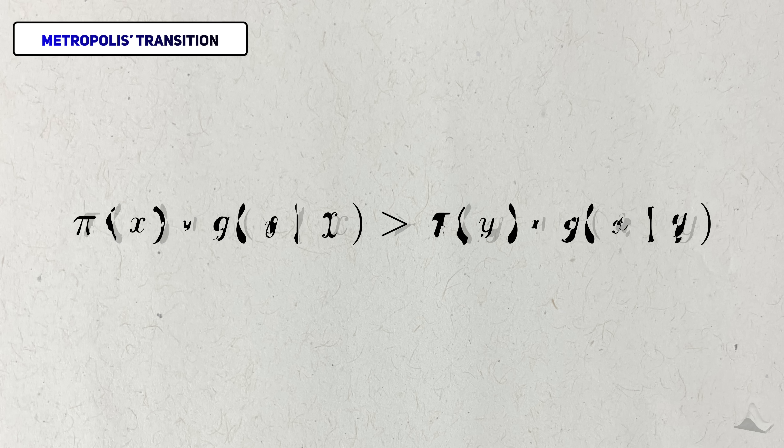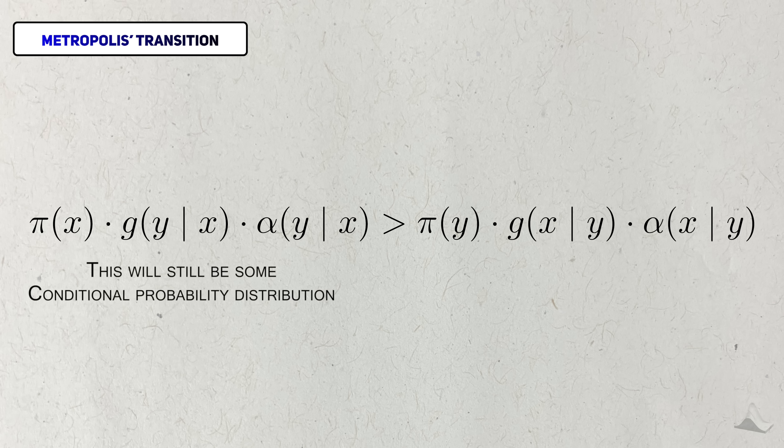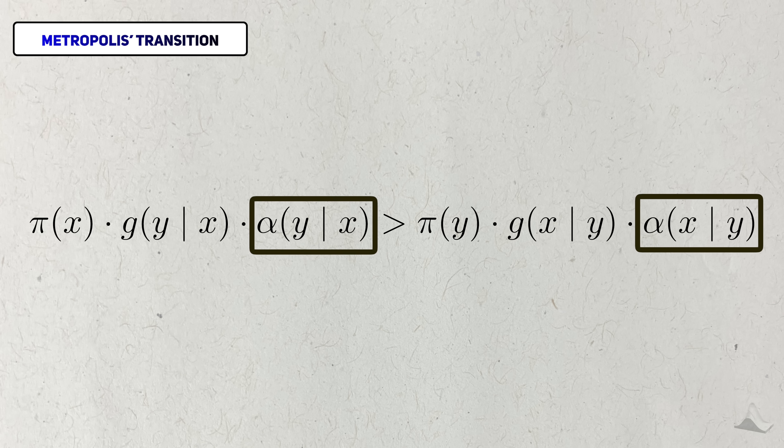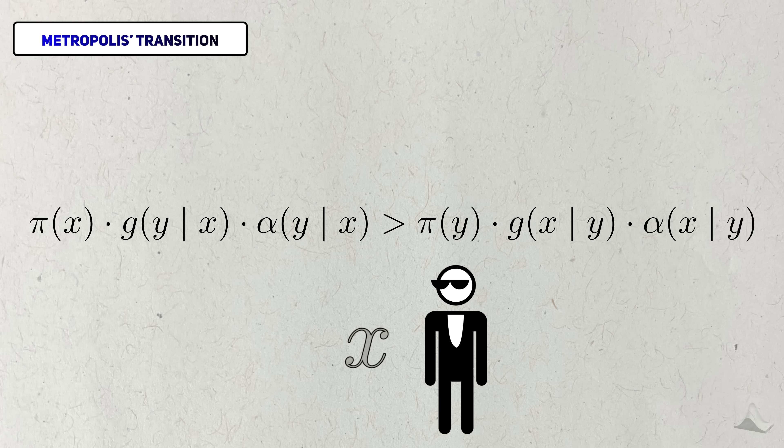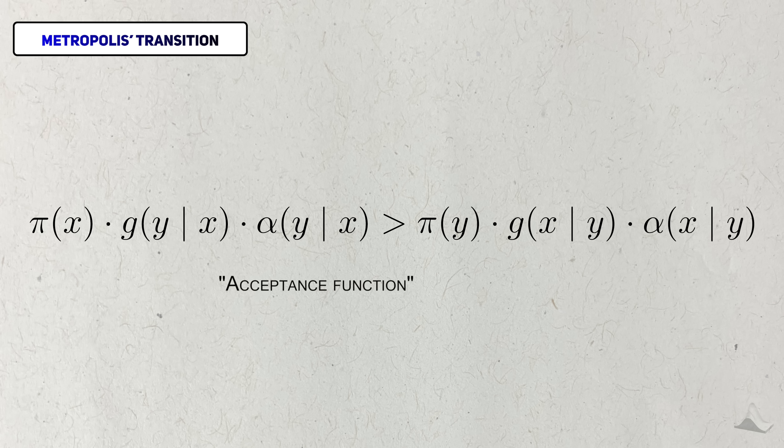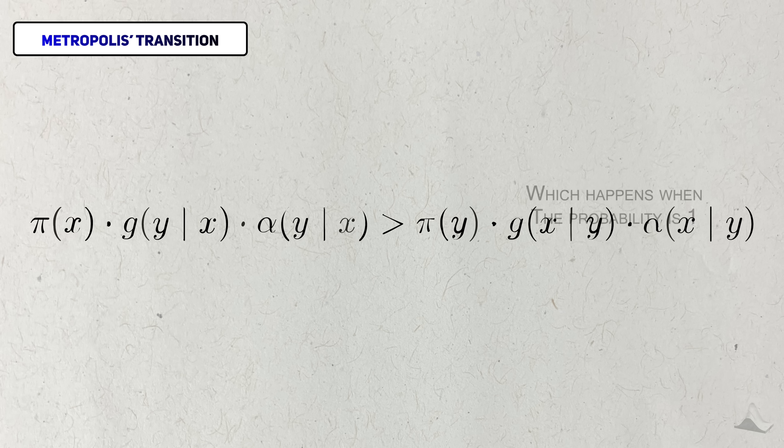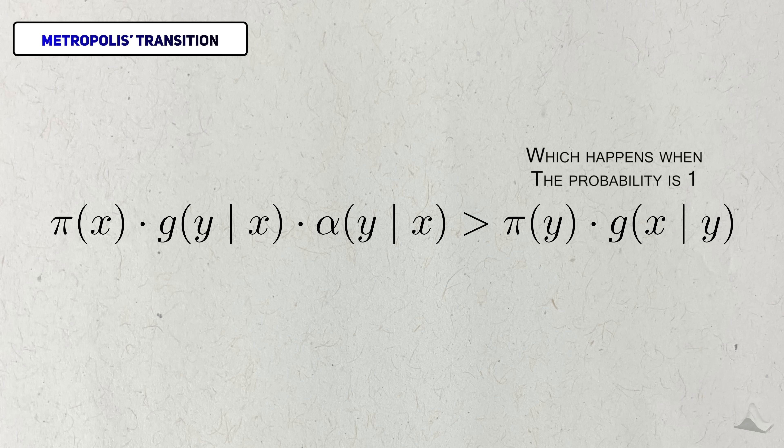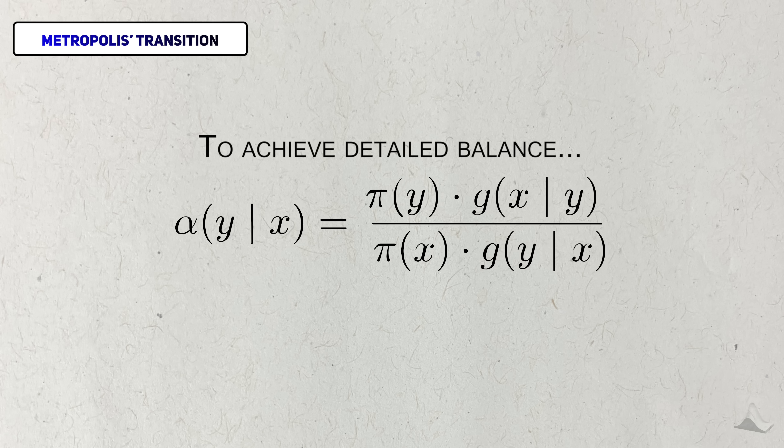To represent this, we'll split the transition distribution into two parts. The function g will still represent some conditional probability distribution, but now there's a new alpha function here. The purpose of this function is to act as a sort of gatekeeper for allowing transitions from x to y. I'll refer to it as the acceptance function. As I've described it, the probability from going from y to x is already too rare. We want detailed balance to hold, so we should maximize this low flow from y to x. We can set it to 1 on this right side, so we're not limiting this transition any further. To achieve detailed balance, we can set these two sides equal to each other and isolate the acceptance function.